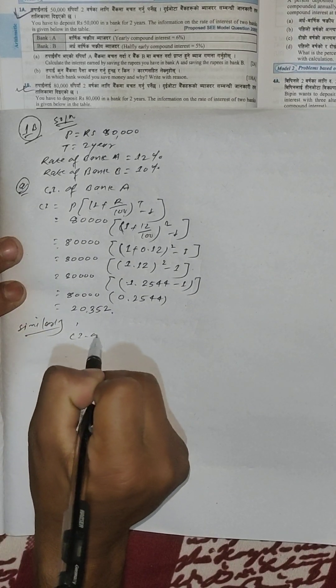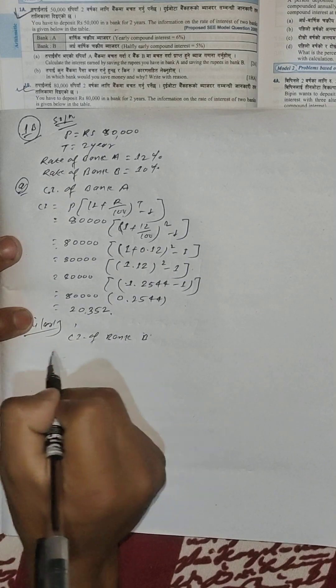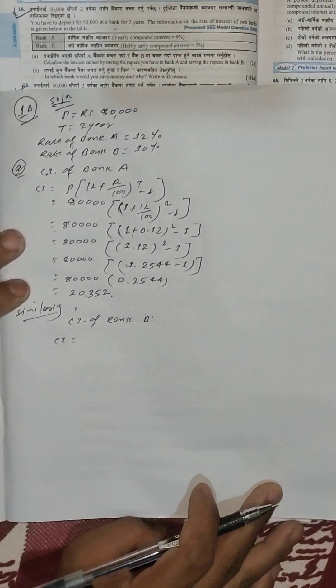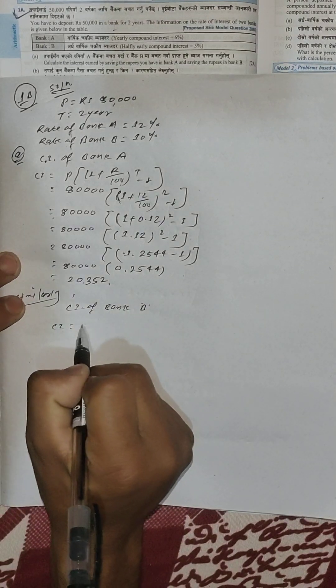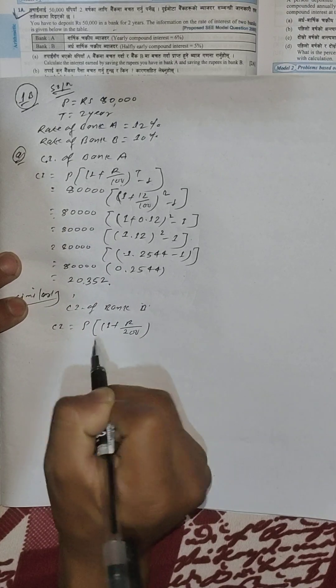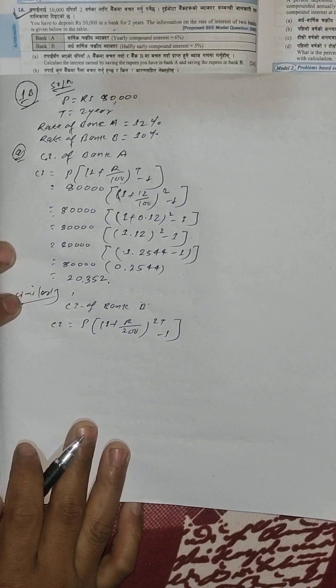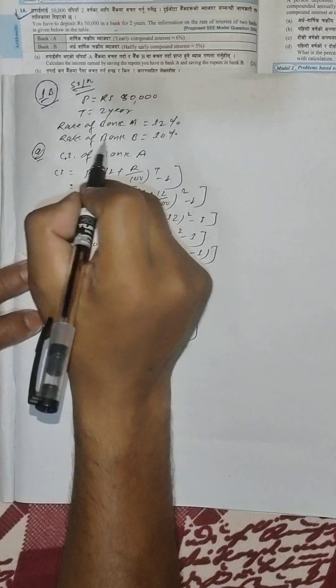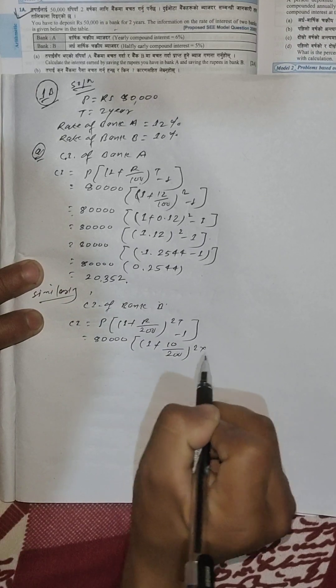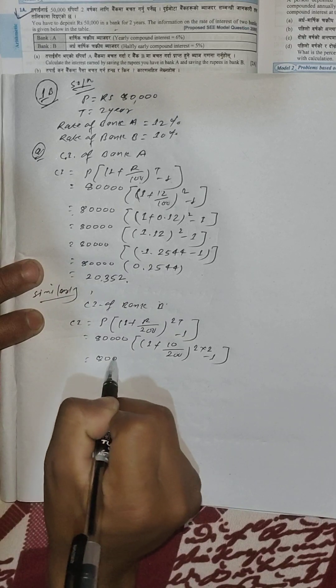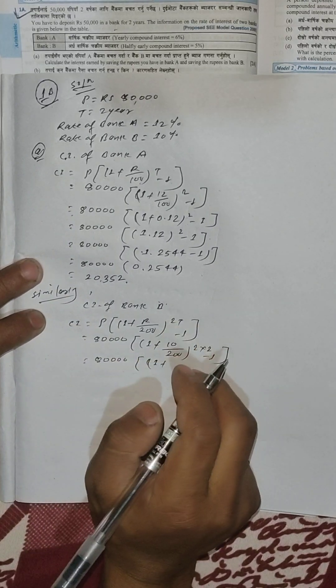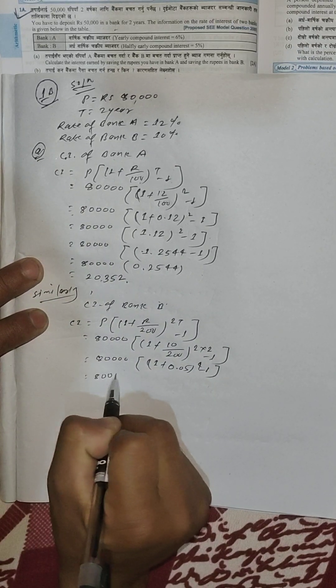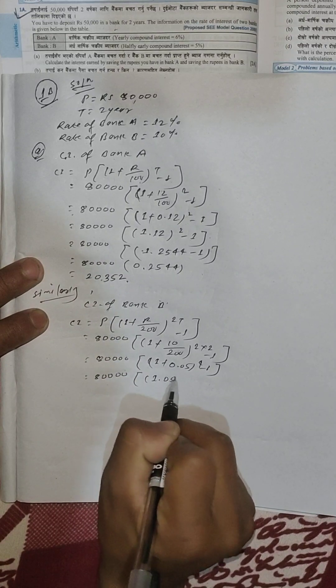Similarly for Bank B, we use the same formula: P times (1 plus r/200) to the power 2T. Since it's half-yearly, it becomes 30,000 times (1 plus 10/200, which is 0.05) to the power 4 minus 1.